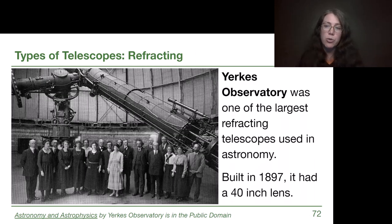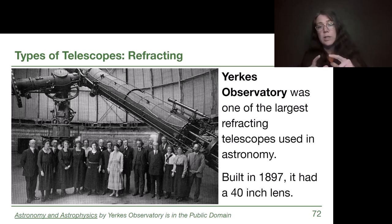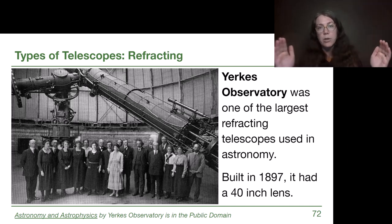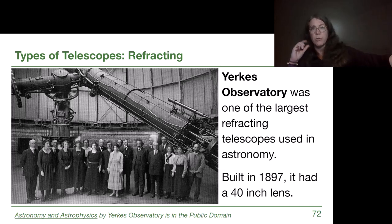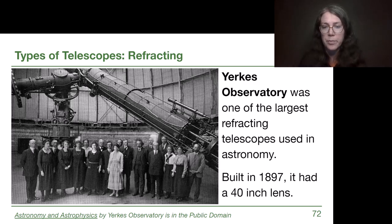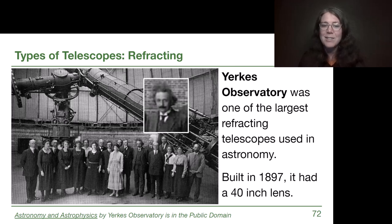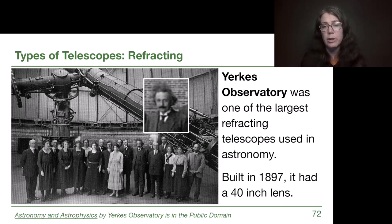Yerkes Observatory was one of the very largest refracting telescopes of its time. As you get bigger and bigger lenses, you need a longer and longer distance to reach the focus point. In an image of Yerkes, you can spot a face familiar from history books — Albert Einstein — giving a sense of when this was happening. Although built in 1897, it's still around and used; it may not be cutting-edge, but a 40-inch lens is still very relevant and useful.